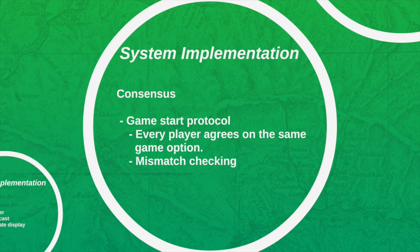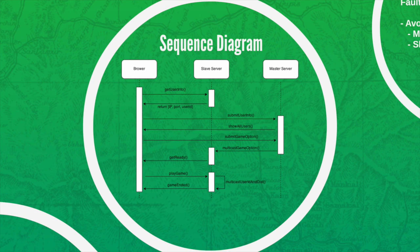As for the consensus, after the player submits the game information to the master server, the master server will multicast the game information to every slave server. After all of the game information is gathered, it will be sent to the browser. The game page will determine whether other players agree on the same game option. The sequence diagram shows the events in the system after the player logs into the system to start the game until the game is ended.